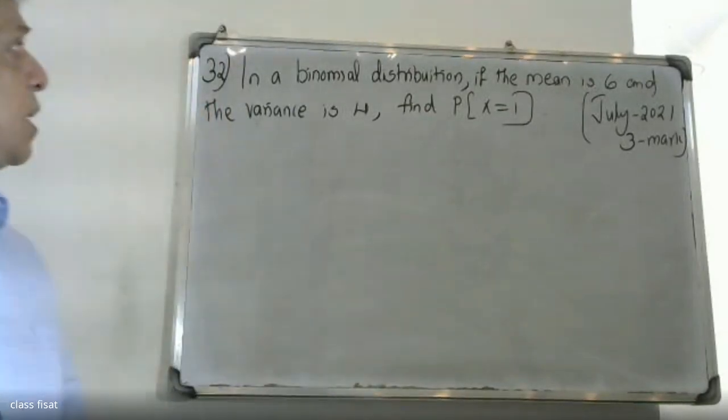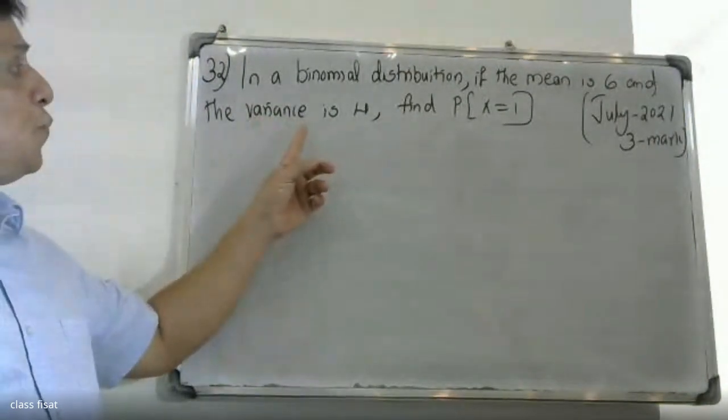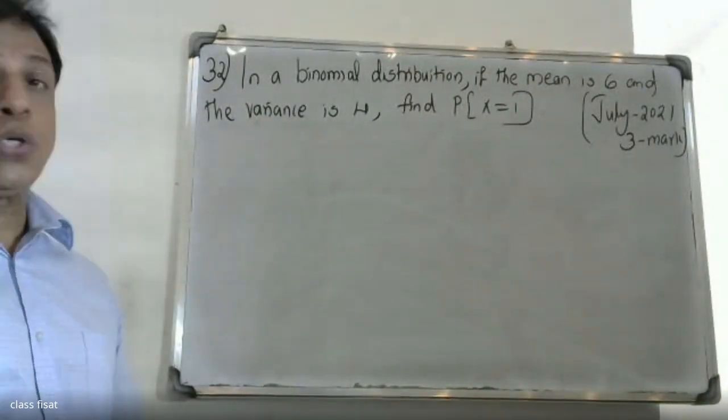Good morning students. Question: In a binomial distribution, if the mean is 6 and the variance is 4, find the probability of X = 1.